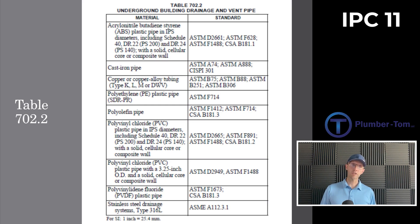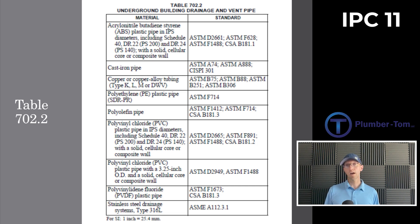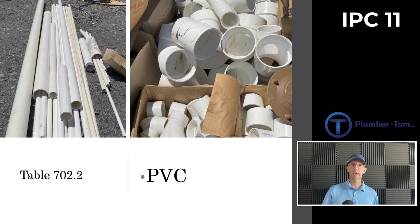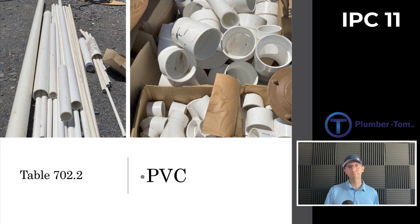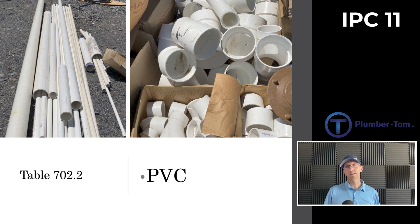Table 702.2 gives us materials that can be used underground for both sanitary drainage and storm drains — a similar list of materials. However, it is not uncommon for storm drains to be run below ground in PVC, because plastics last longer below ground than cast iron. Cast iron has protective coatings, but over time the earth and water eat through, while plastics do just fine underground. Plus, you can't hear it underground anyway, so PVC below ground for storm drainage is very common.